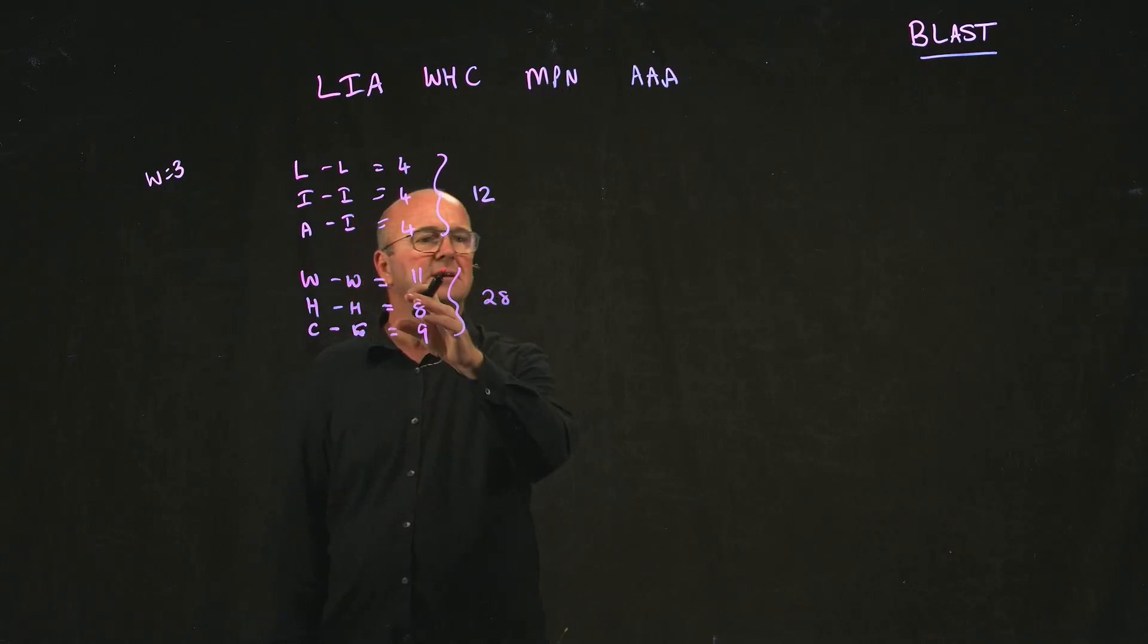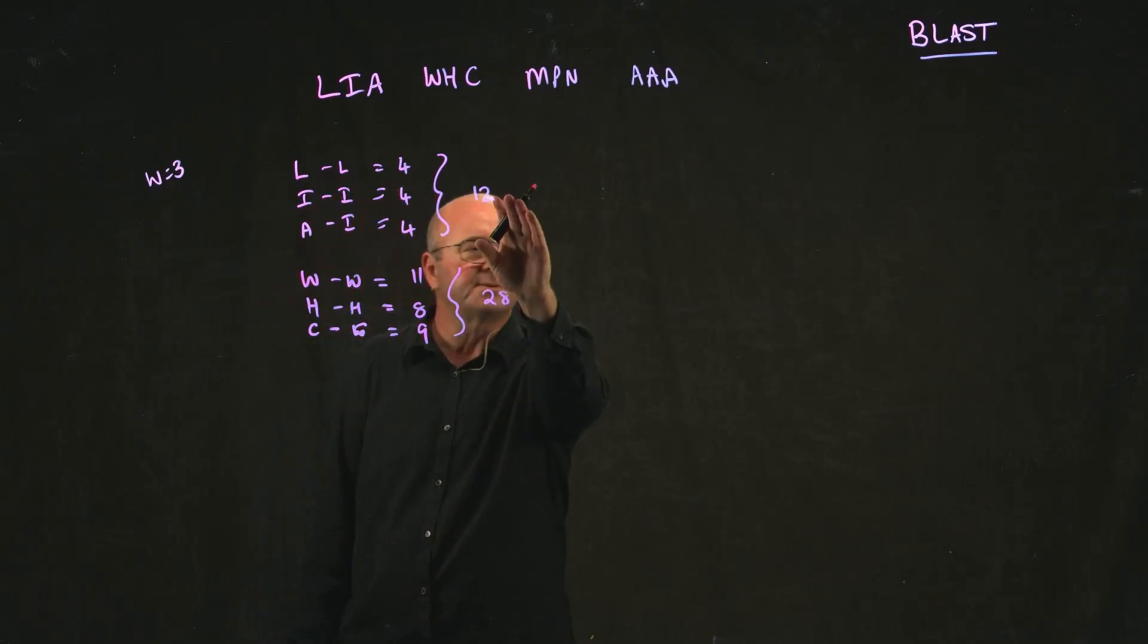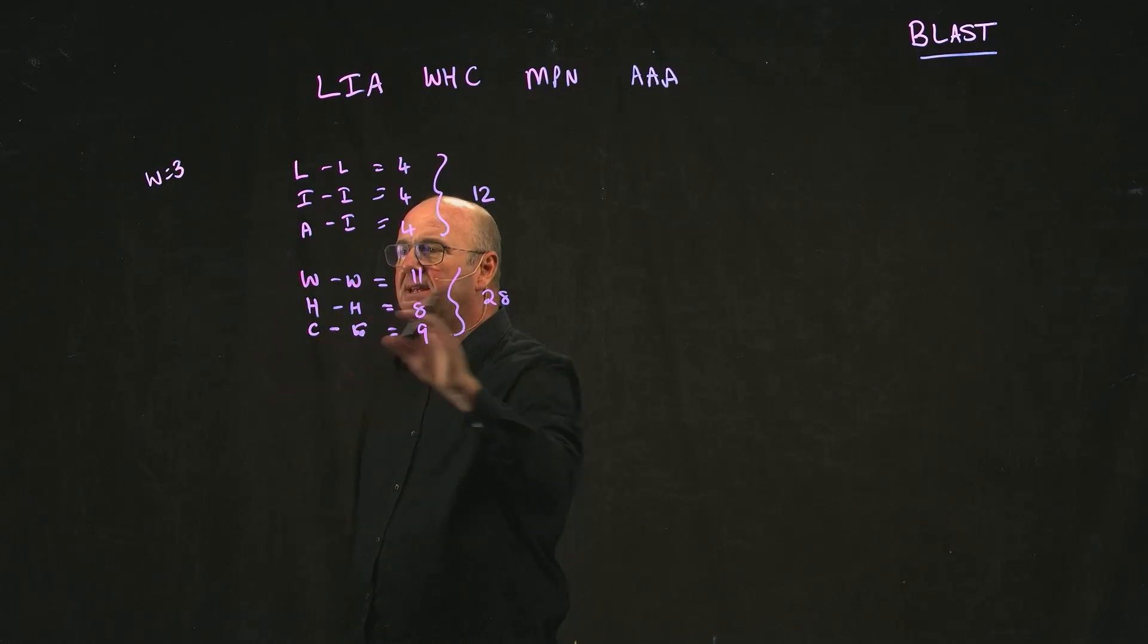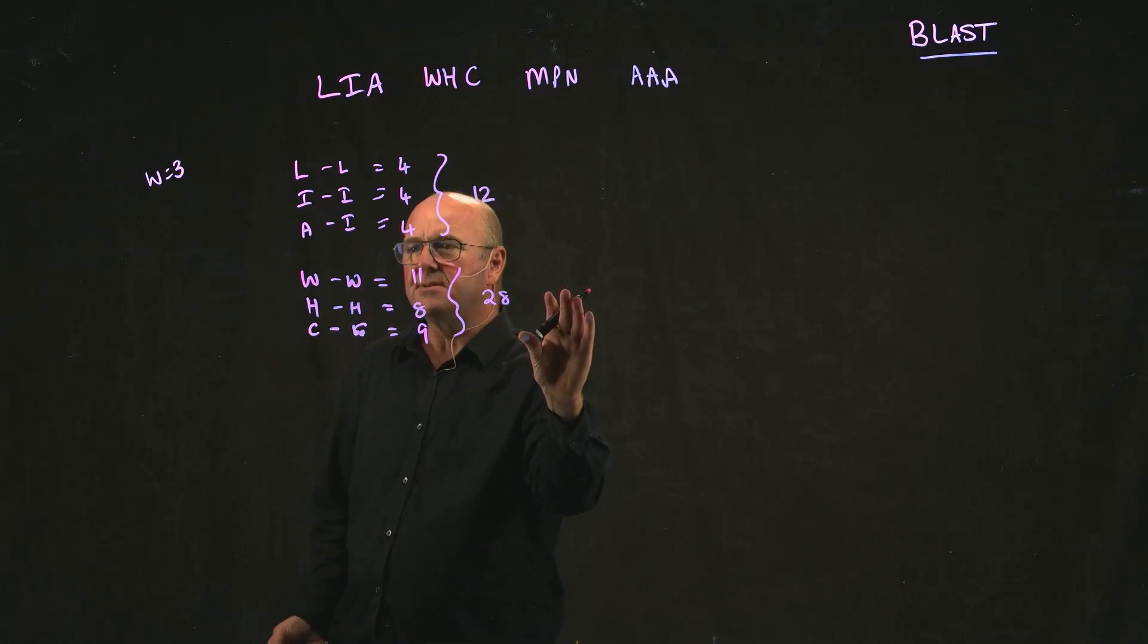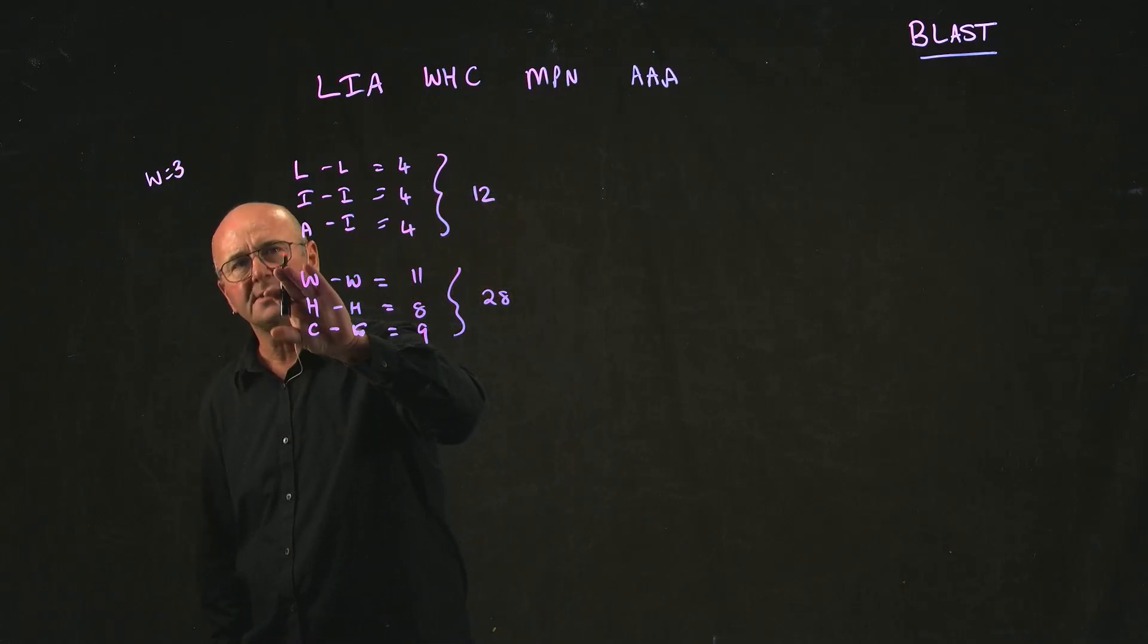So if we find a word LIA, it only gives us a score of twelve. That's the best we can get. If we find the word WHC, we're going to get a score of twenty-eight. So that three-letter word is much more important than this three-letter word.